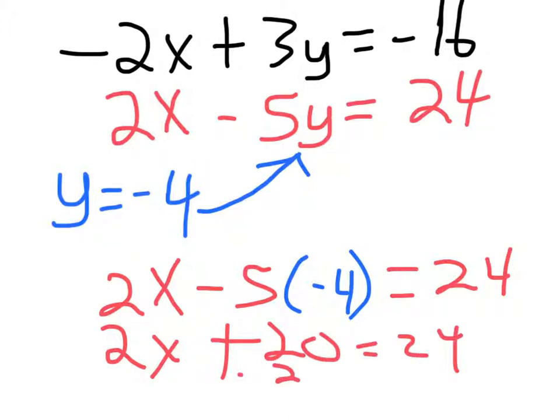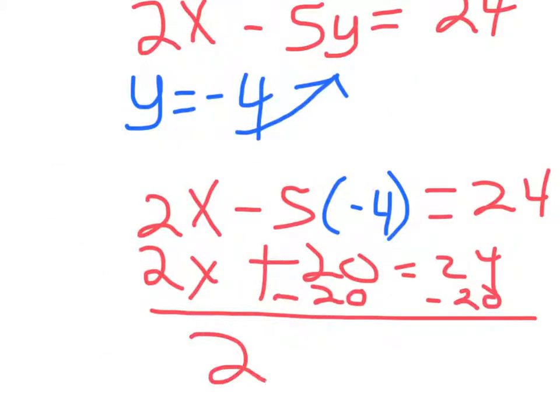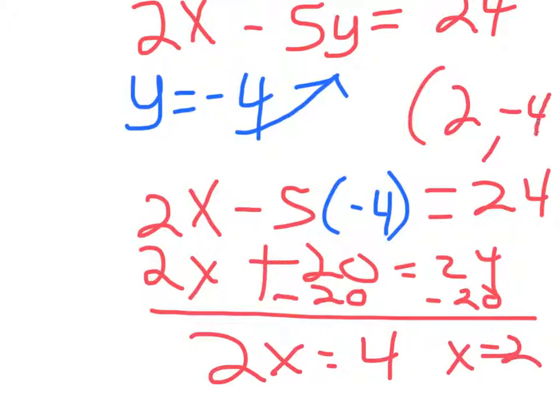We've got to subtract the 20 from both sides. So we're left with 2x on this side. 24 minus 20 gives us 4. So x is going to be 2. That means the solution to this system is 2 comma negative 4. They cross at the point 2 comma negative 4.